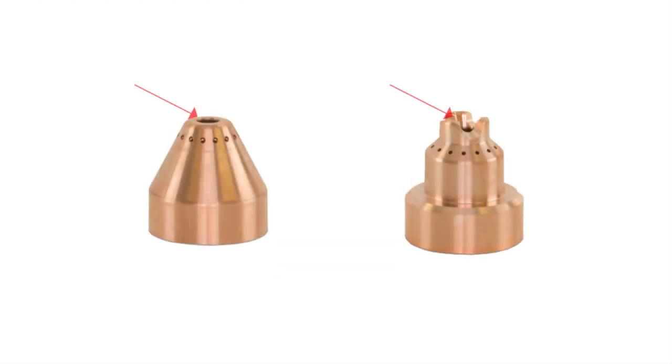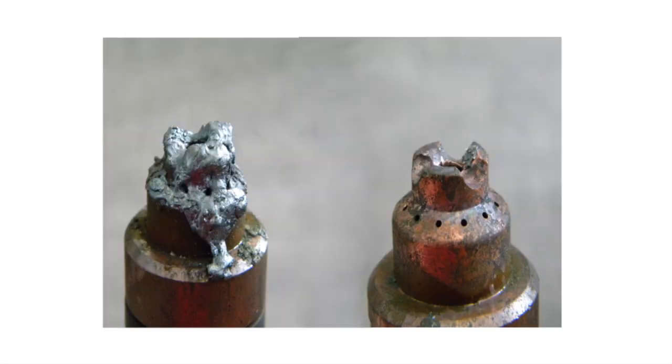The shield has a main orifice that aligns with the nozzle orifice and may have additional vent holes around the center. The most common issues associated with the shield are damage to the main orifice or clogging of the vent holes. Both issues can cause performance problems.